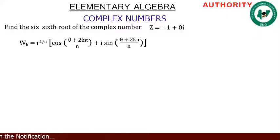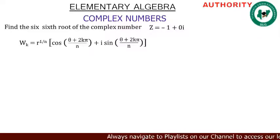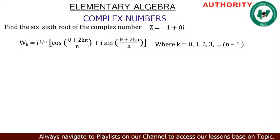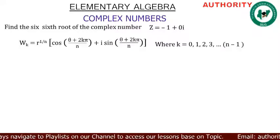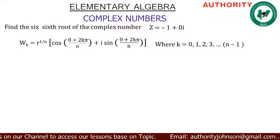The root of a complex number has the formula: w = r raised to power 1/n, times the quantity cos((θ + 2kπ)/n) + i·sin((θ + 2kπ)/n), where k = 0, 1, 2, 3, continuously up to n minus one.